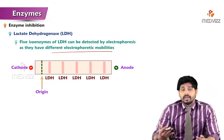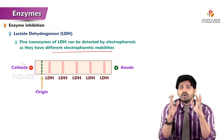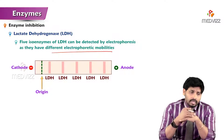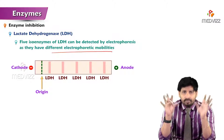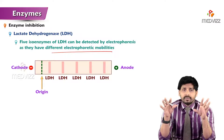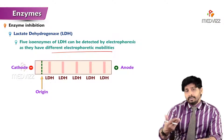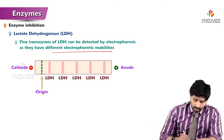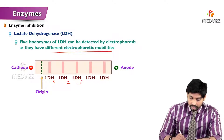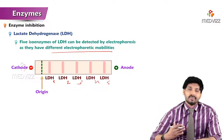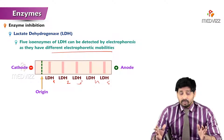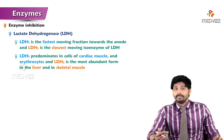Though twins are identical, their fingerprints will differ. In the same way, based on electrophoretic mobilities, LDH1 will move the furthest, followed by LDH2, LDH3, LDH4, and LDH5. Based on the distance traveled in electrophoresis, we can separate and categorize the isoforms of lactate dehydrogenase. LDH1 is the fastest-moving fraction towards the anode, and LDH5 is the slowest.